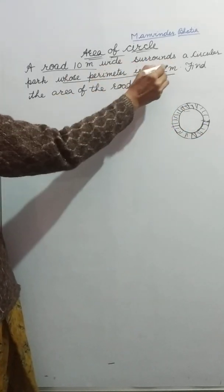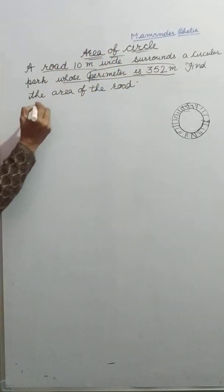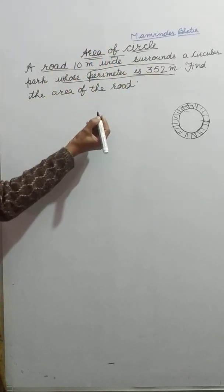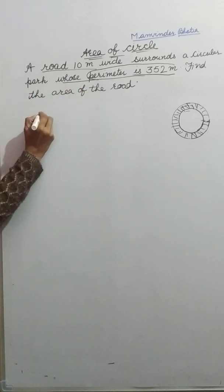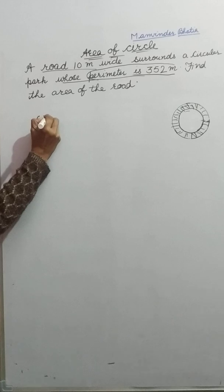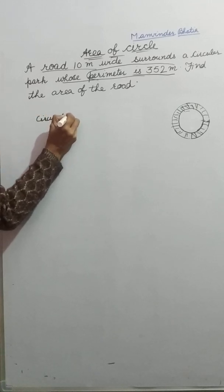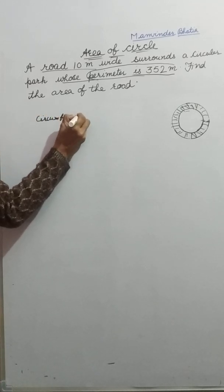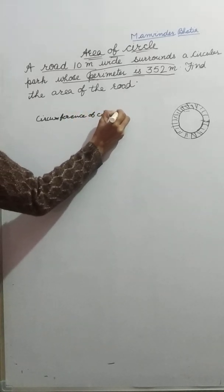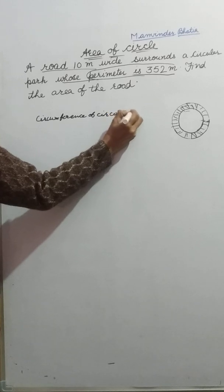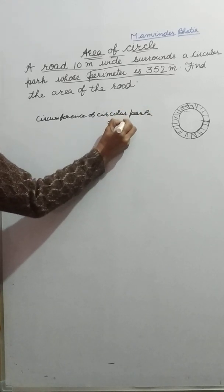First of all, whatever information is given to us, we will take it: perimeter of circular park, which is the circumference of the circular park. The circumference of the circular park is 352 meter.